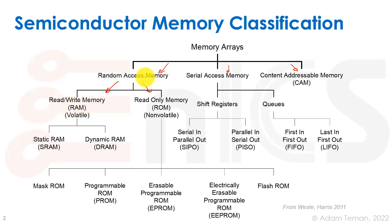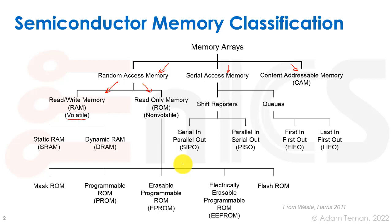When we talk about RAM, which is read-write memory, this is a random access memory meaning we can access any word, byte, or bit randomly without having to follow a specific order. Read-write memories are volatile — once you turn off the power or remove the battery, we lose the data. The two types are static RAM (SRAM) and dynamic RAM (DRAM), which we discussed in this lecture.